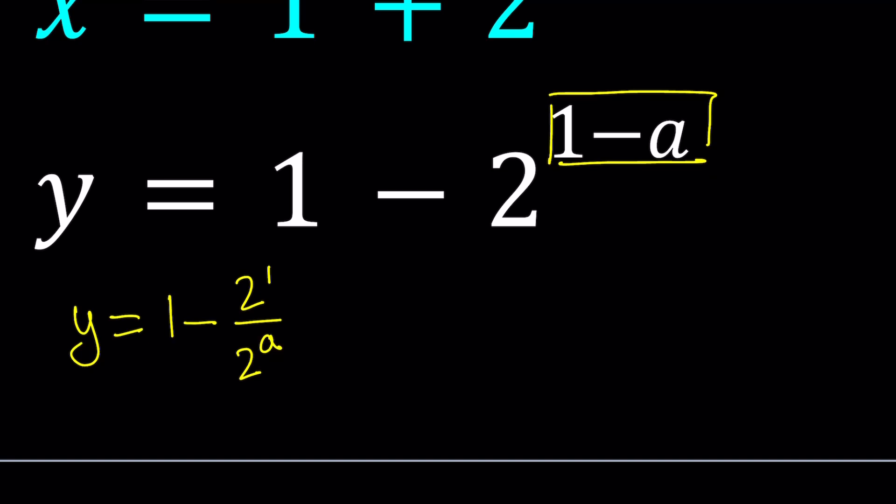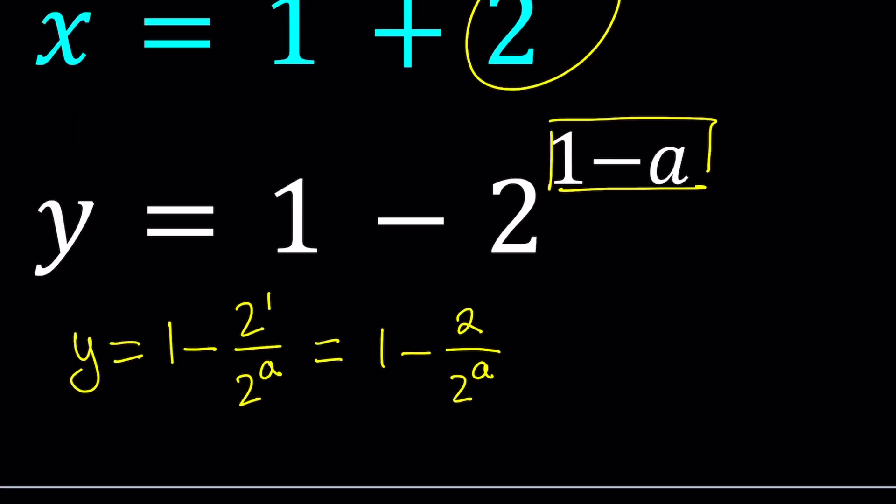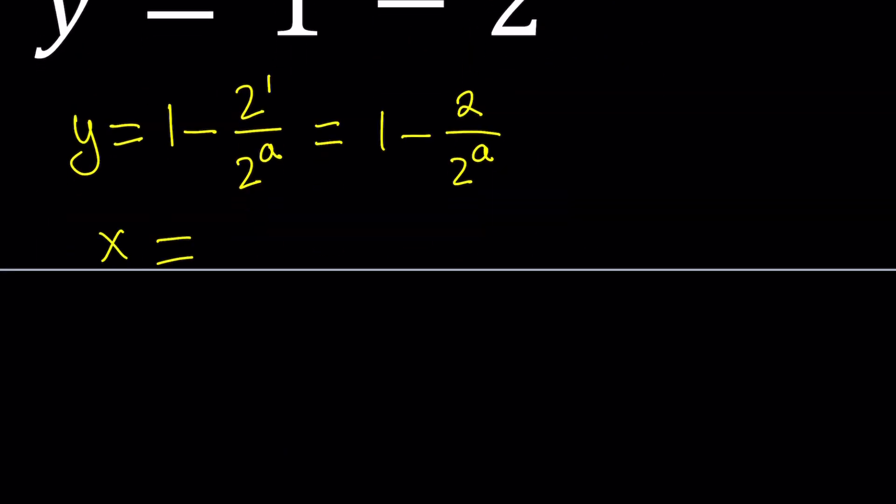So we can work both ways. So from here we can write this as 1 minus 2 over 2 to the power a. So we were able to write y in terms of a, but in a simpler form, because now 2 to the power a kind of stands out. And notice that we also have 2 to the power a in the first equation. So what can I do with this? Let's write the x here. x equals 1 plus 2 to the power a.